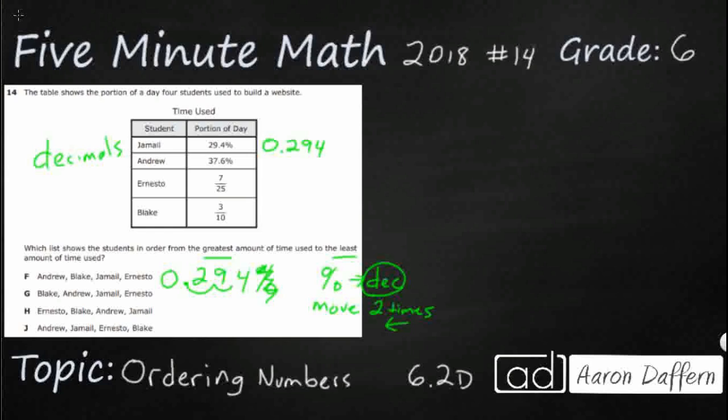So changing from percent to decimal is pretty easy. Let's do our 37.6%, take our decimal, move it once, move it twice, put a zero in the ones place if there's not anything there, drop the percent, 0.376.